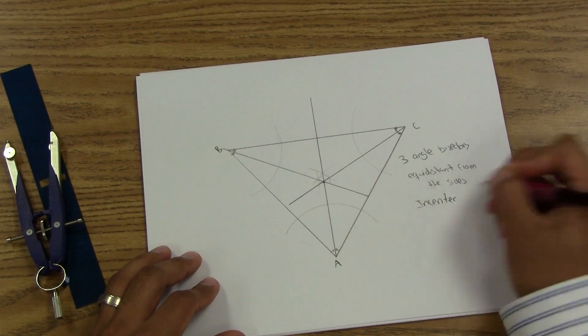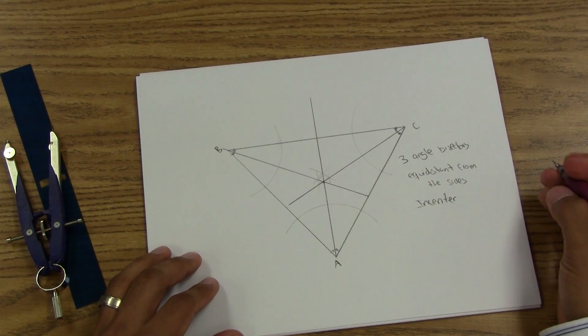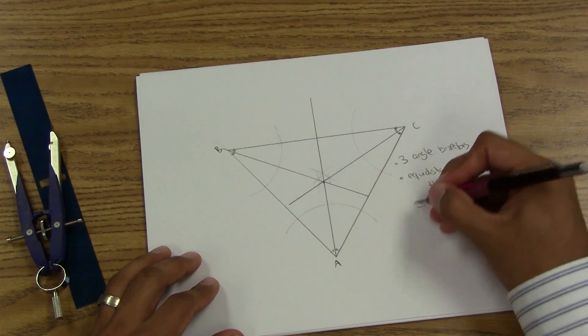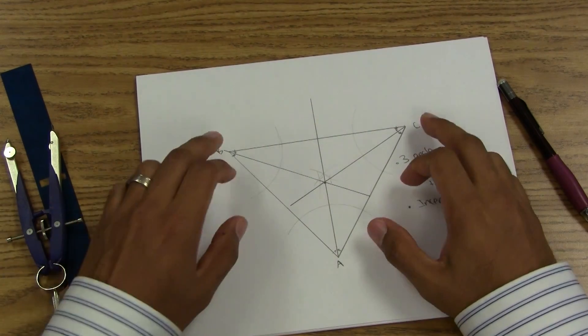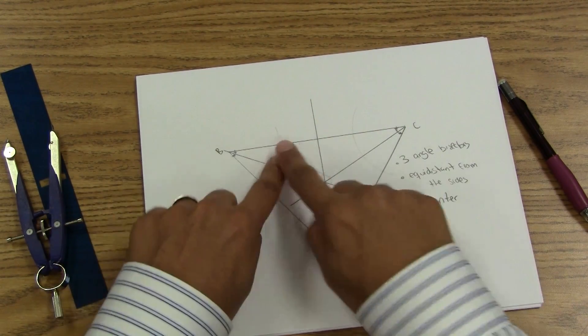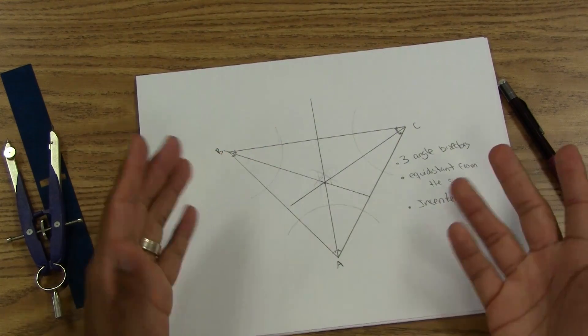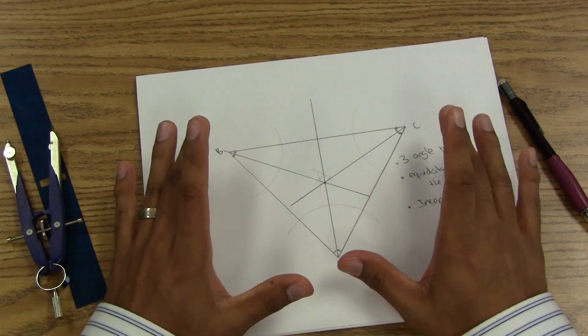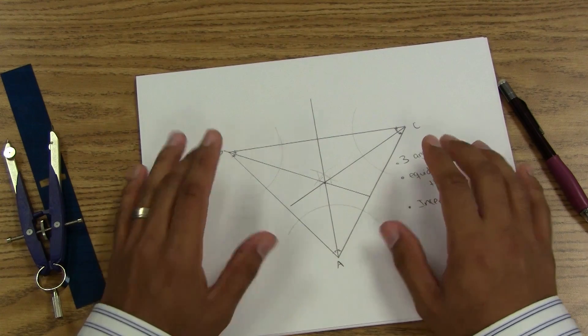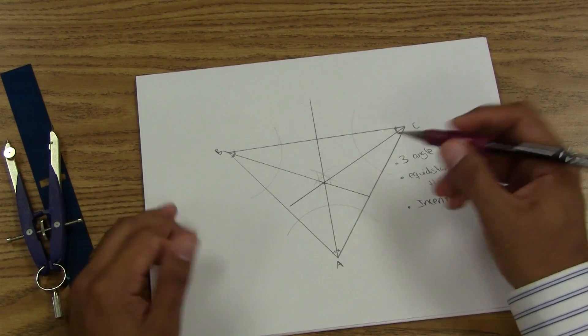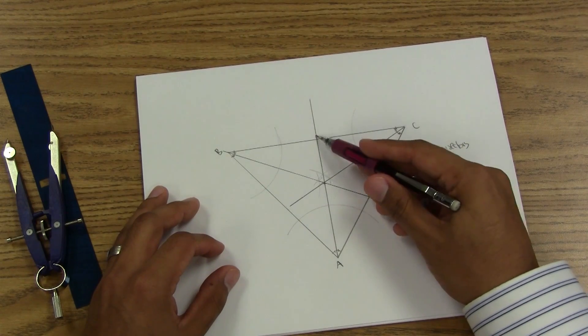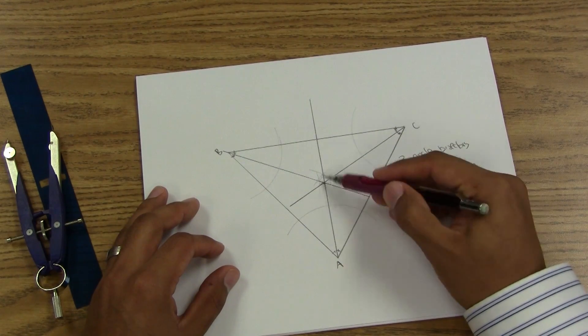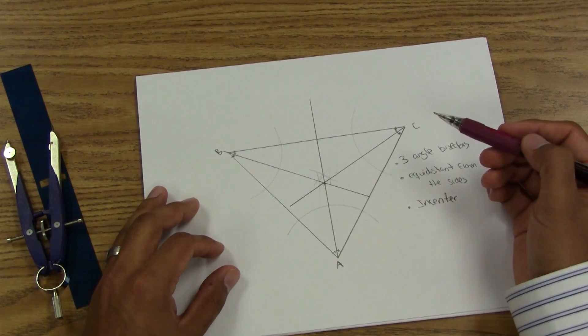So if you have a trail that intersects at a triangle and you want to find the spot where you can set up a water station or first aid station that is equidistant from the trail, what you would want to find out is the incenter.